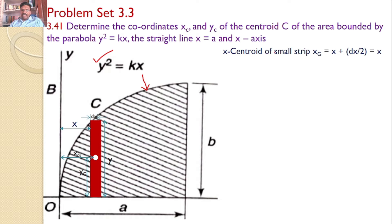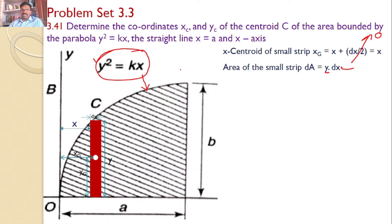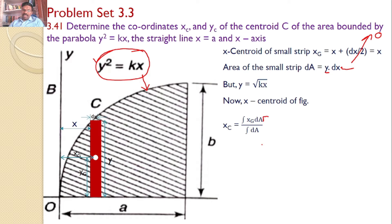First, calculate the x-coordinate of the centroid for the small strip: x_g = x + dx/2 ≈ x (since dx/2 is very small). The area element dA = y·dx. Since y is a function of x related by y² = kx, x_c = ∫x_g·dA / ∫dA. The numerator ∫x_g·dA = ∫x·y·dx = ∫x·√(kx)·dx.